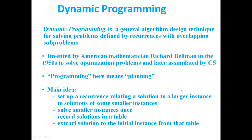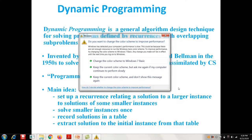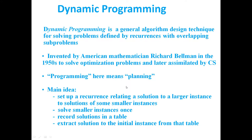Till date, dynamic programming is best suited for optimization problems. The main idea is to set up a recurrence relation which is a solution for a larger instance, solve the smaller instances of that larger problem, record the solutions in a table, and then extract the solution to the initial instance from that table. You will understand the beauty of dynamic programming after we discuss some examples.